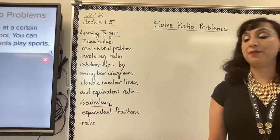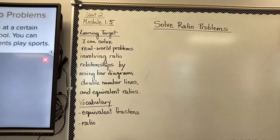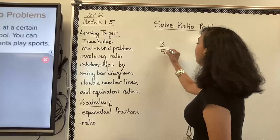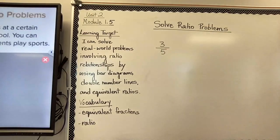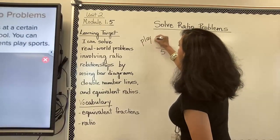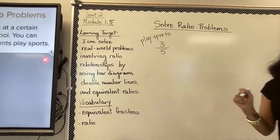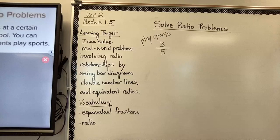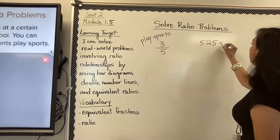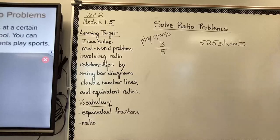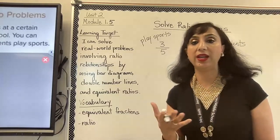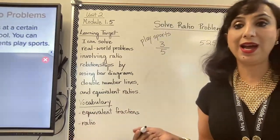Let's start with a word problem. Suppose three out of five randomly selected students at a certain school play sports — so three out of five play sports. There are 525 students at the school total. We can create a bar diagram to predict how many students play sports. I'm going to show you the bar diagram method and also how to create an equivalent ratio to solve this.